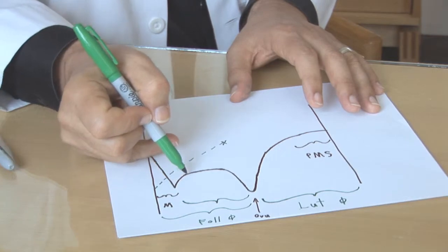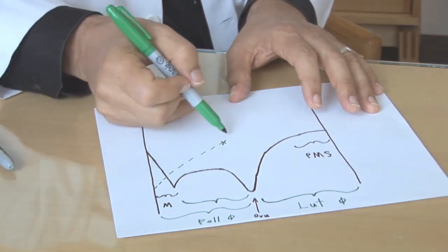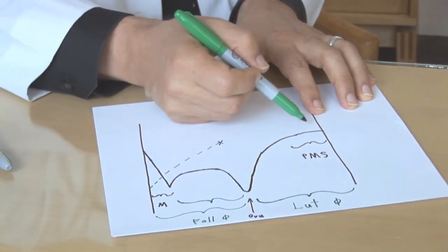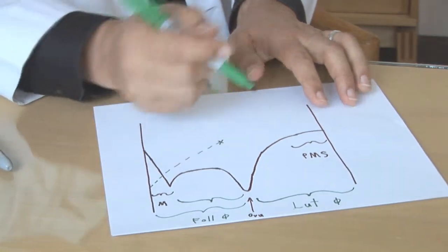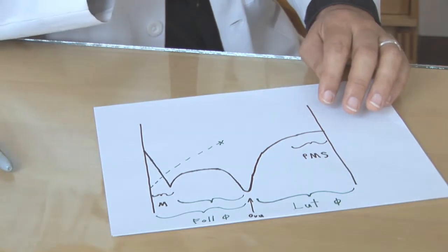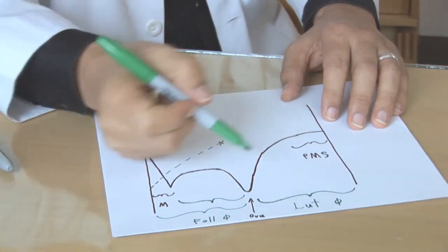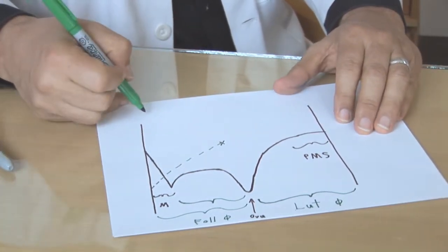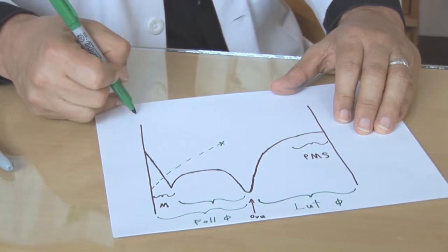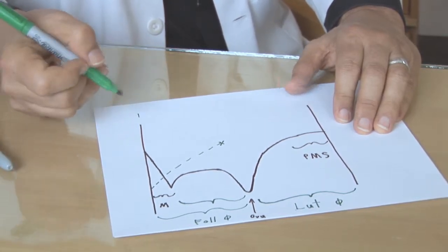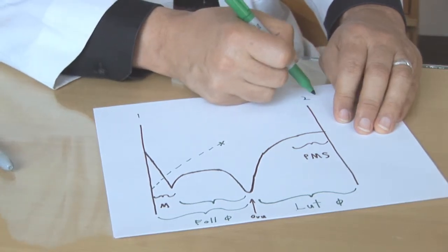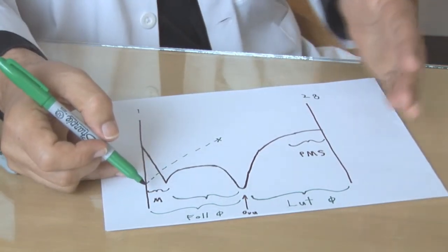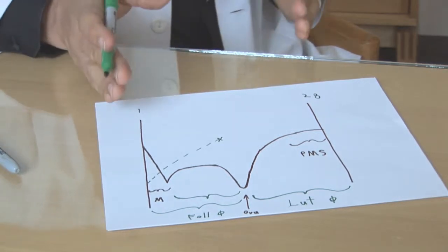During this time, progesterone is increasing as is estrogen. But during this other phase, the progesterone is going much higher with the assistance of the corpus luteum, which used to be a follicle. Now we take the number of days here. The standard you will hear is a 28-day cycle. So this is day 1, this is day 28. Day 29 is day 1. That's the ideal. That's the optimal cycle.